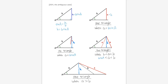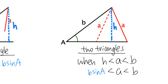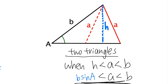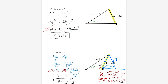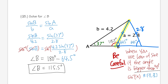To summarize the ambiguous case: with SSA, you may get zero, one, or two triangles depending on how side a compares to h and b. Most importantly, if an angle is clearly greater than 90°, be careful with Law of Sines — or watch the next video on Law of Cosines, which handles these situations more directly.